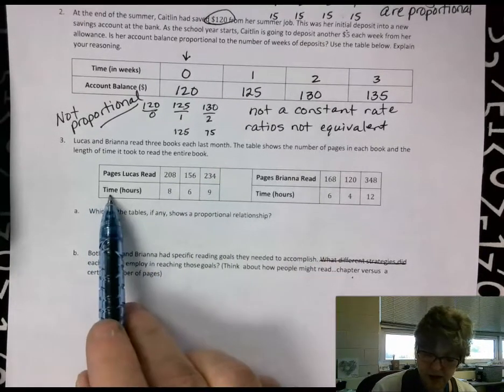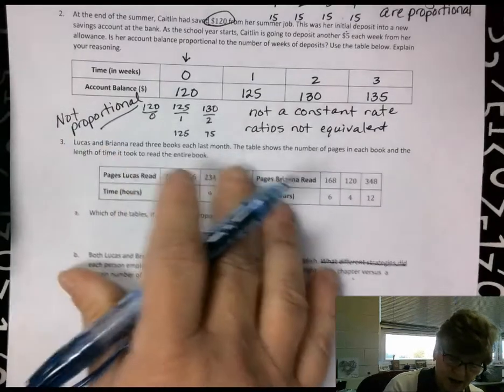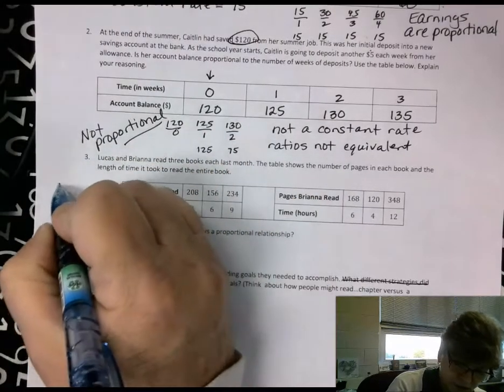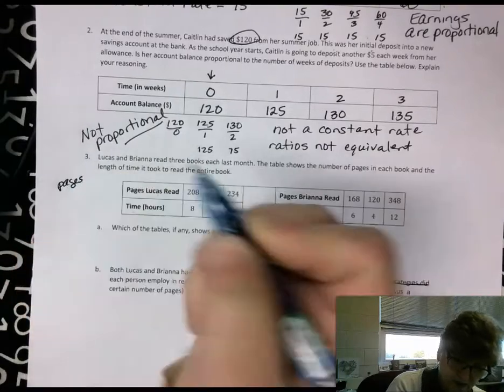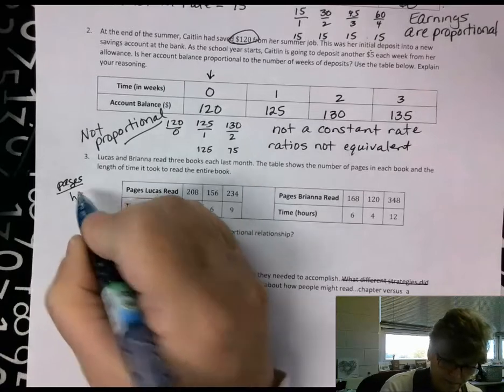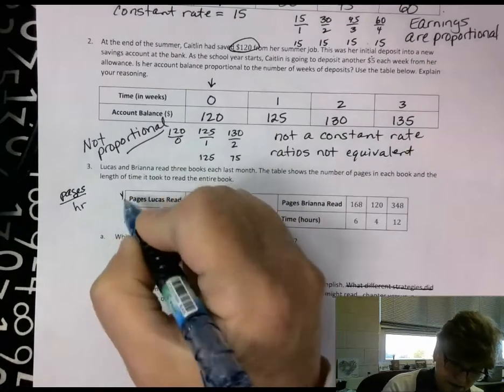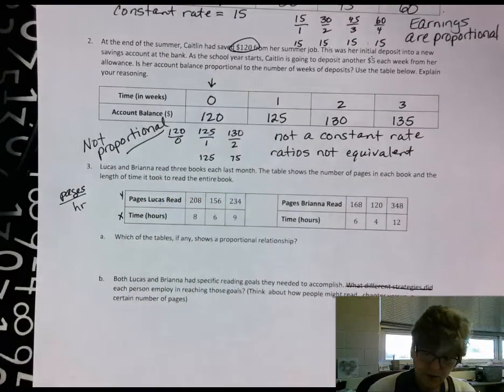So remember to determine that constant rate, it's going to be pages read over the number of hours. So pages per hour. So here we go.